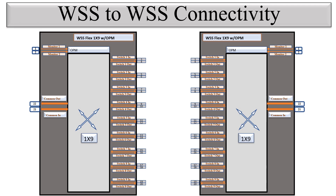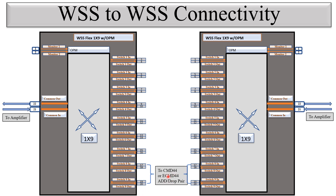For WSS-to-WSS connectivity, port 22 is the common output and port 21 is the common input of the 1x9 WSS. These two common ports connect to the amplifiers. Switch port eight and switch port nine connect to the CMD44 or enhanced CMD44 as the add/drop pair. Switch ports one to seven are used to pass through lambdas — so if a lambda coming from one direction needs to pass to another direction, we connect a switch port of one WSS to a switch port of the other WSS.